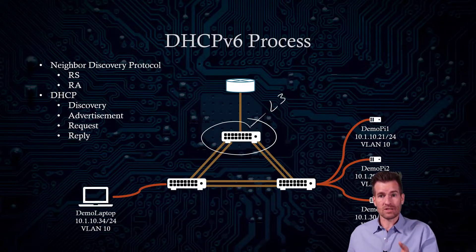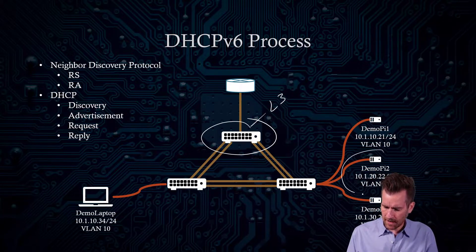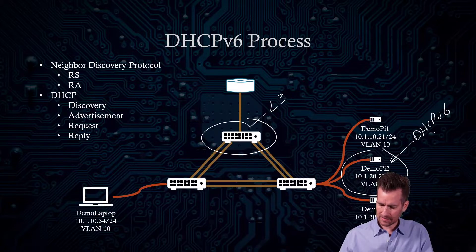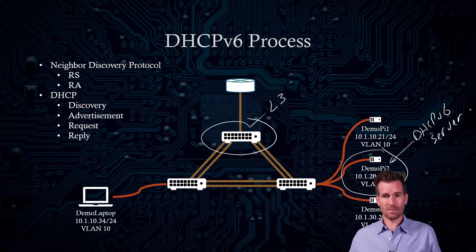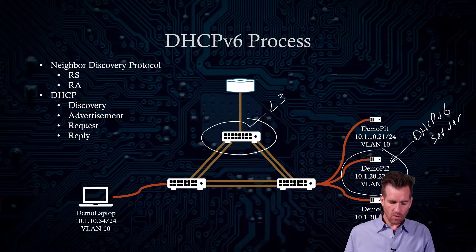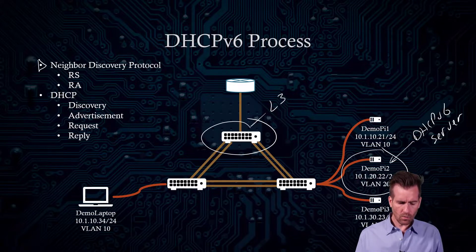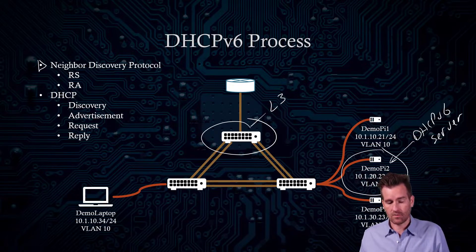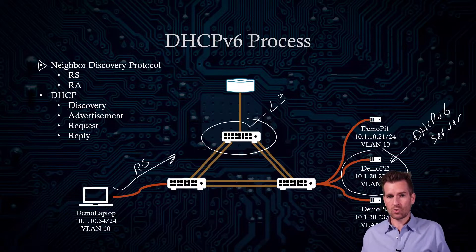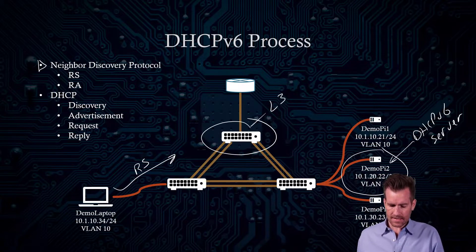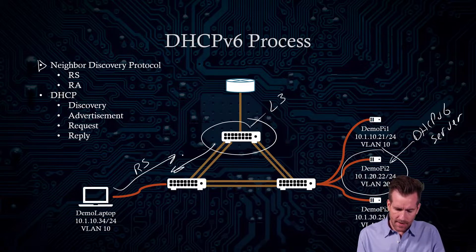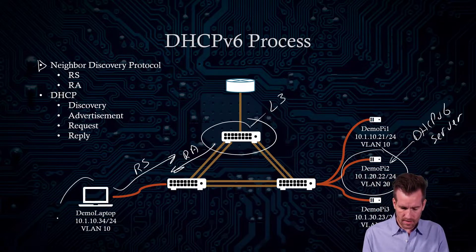Let's take a look at the DHCP version 6 process. In this case, we are going to specify that our demo PI 2 is actually going to be a DHCP version 6 server, and that is going to be what hands out some additional options and additional information about this network. The process is going to start out with the neighbor discovery protocol. When this client connects to the network, it's going to send out a router solicitation that goes to all routers on the network. This layer 3 switch has joined that router multicast group, and so it will respond back with a router advertisement, giving some information to this demo laptop.